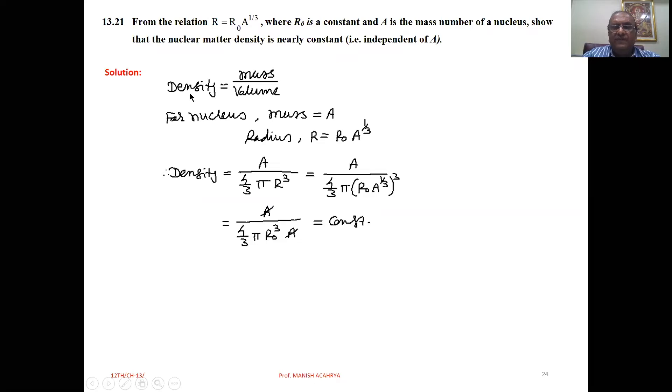Now, density is mass upon volume. For nucleus, mass is represented as a, radius r equal to r0 a raised to one third. Density is atomic mass a upon volume, that is 4 by 3 pi r cube.